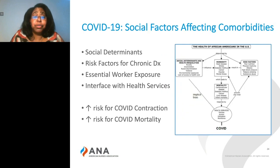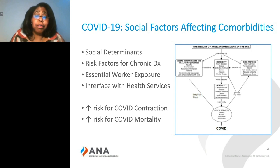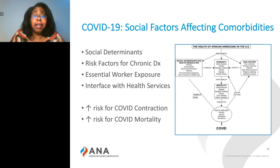Social determinants of health and health inequities — including poverty, discrimination, environmental issues, and access to care — increase the risk of experiencing chronic illnesses. Problems with nutrition, exercise, obesity, hypertension, and other chronic illnesses increase the likelihood of morbidity risks for African Americans. These diseases cumulatively increase the risk for potential mortality, and access to health care combined with implicit biases within the health care system further increases the risk for COVID contraction and COVID mortality.